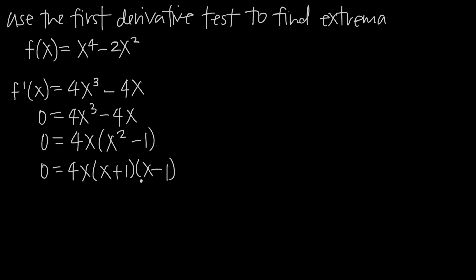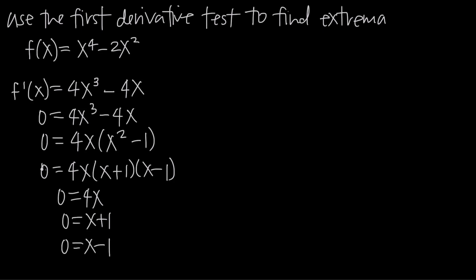Using the zero product theorem, we set each factor equal to zero individually. Setting 4x = 0 gives x = 0. Setting x + 1 = 0 gives x = -1. Setting x - 1 = 0 gives x = 1. Because these are the solutions to setting the derivative equal to zero, these are the potential critical points of the function.